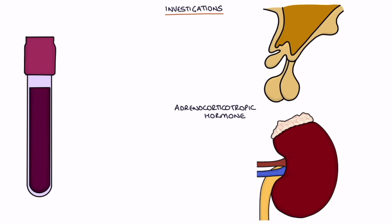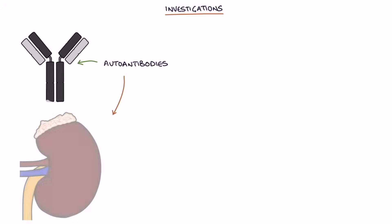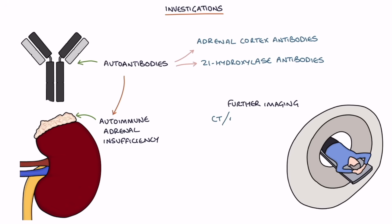Adrenocorticotropic hormone or ACTH can be measured directly on a blood sample. The ACTH level is high in primary adrenal insufficiency, as the pituitary is producing lots of ACTH — without cortisol, there is no negative feedback to control ACTH production. The ACTH level is low in secondary and tertiary adrenal insufficiency. Auto-antibodies may be present in autoimmune adrenal insufficiency, including adrenal cortex antibodies and 21-hydroxylase antibodies. Further imaging may be needed to assess the cause, including a CT or MRI scan of the adrenal glands and an MRI scan of the pituitary.